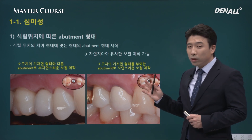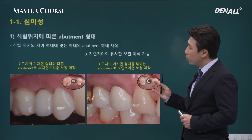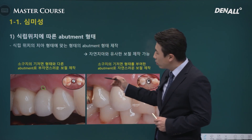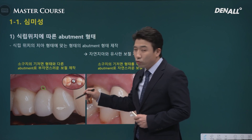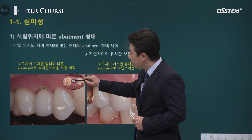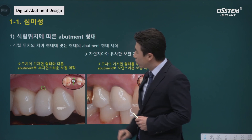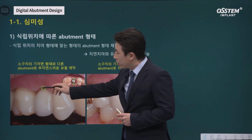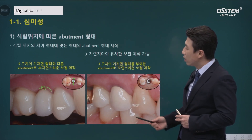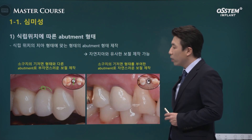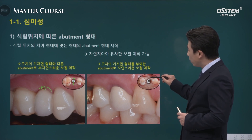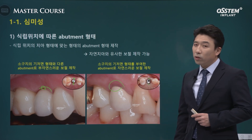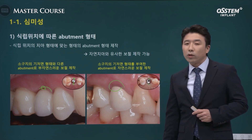Let me give you an example using a premolar. The cervical third is shown here. The abutment does not have sufficient buccolingual width, and that is why it looks like this. The width should be sufficient in order to imitate natural teeth, but because it was insufficient, it resulted in this appearance. Here, with sufficient buccolingual width, it looks much more natural — more so than the crown.